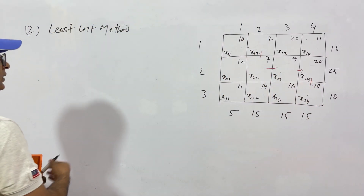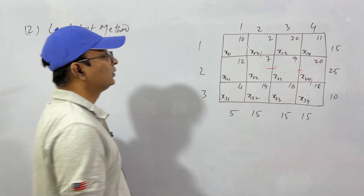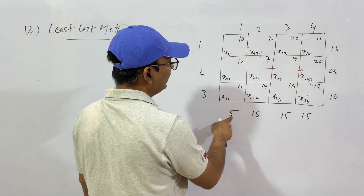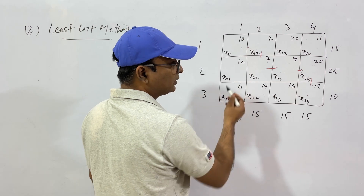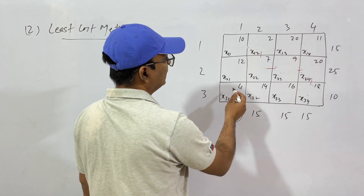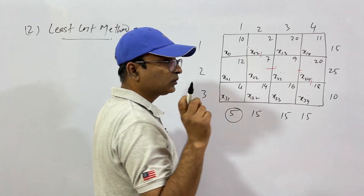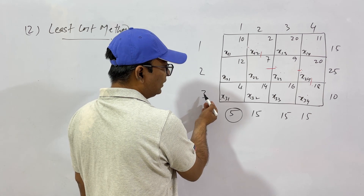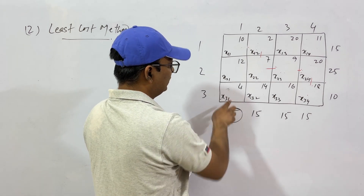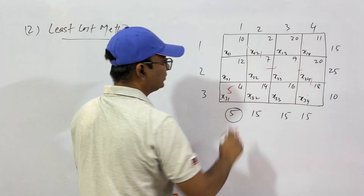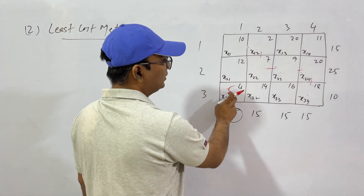In the least cost method, we try to find the least cost path. We start with the first column — demand is 5. Looking at the costs: 10, 12, 4. The cell with cost 4 has the lowest cost per unit. Since the supply can fulfill this demand, we allocate 5 from the third source — because this is the least cost.